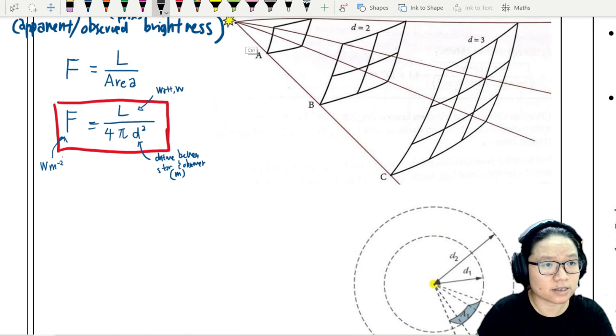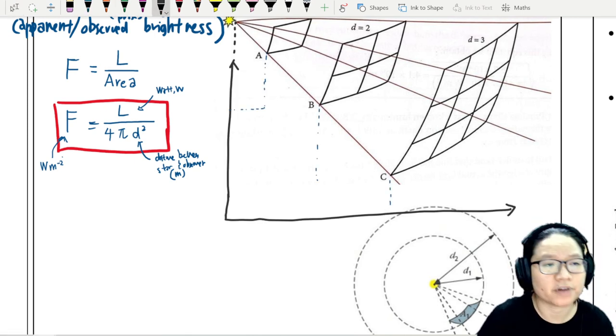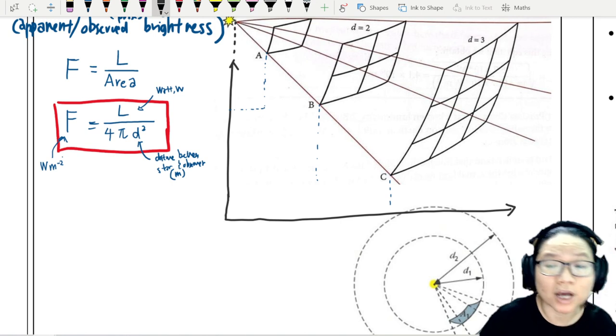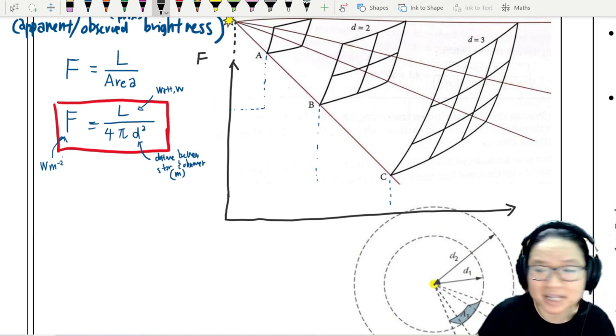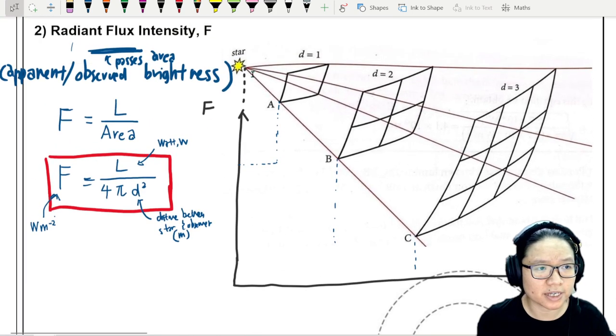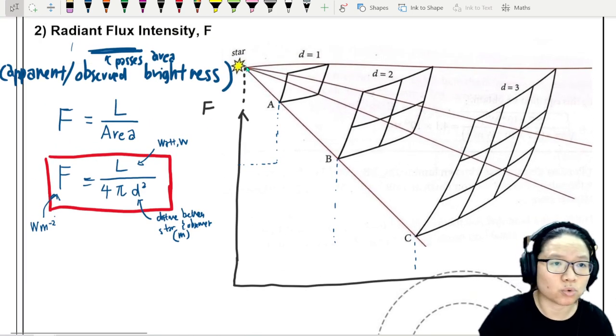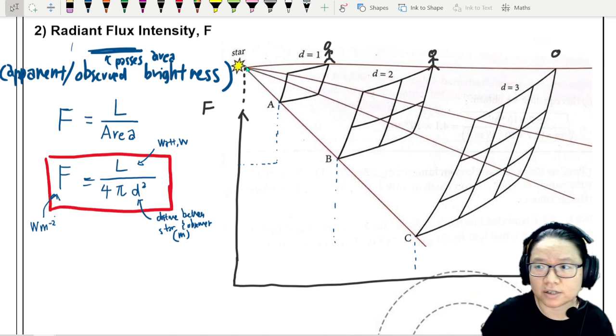So let me try to draw the axis. This is a graph or axis of intensity, but we are doing astro, right? So this is radiant flux intensity F against distance D. Because the distance between the star, which is here, and the observer, I don't know whether the observer is here or here or here.